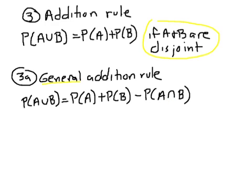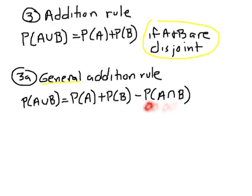Think about it this way: what's the probability of someone taking French or being a junior? You wouldn't just say it's the probability of taking French plus the probability of being a junior, because that's going to count certain people twice. Those juniors who are taking French are going to be included in both, which is why the general rule says we subtract out the people taking both. The word 'disjoint' means things that cannot happen at the same time — being a junior and taking French are not disjoint, which is why we subtract out the overlap.